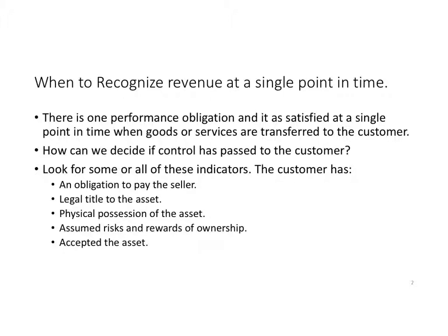In the Subway sandwich example, you don't get possession of the sandwich until you pay for it. But once you have physical possession, you have the risks and rewards of ownership. What we have to decide is whether control is transferred to the customer, because until control of the goods or services has passed to the customer, revenue cannot be recognized. There are a number of indicators we can look at.